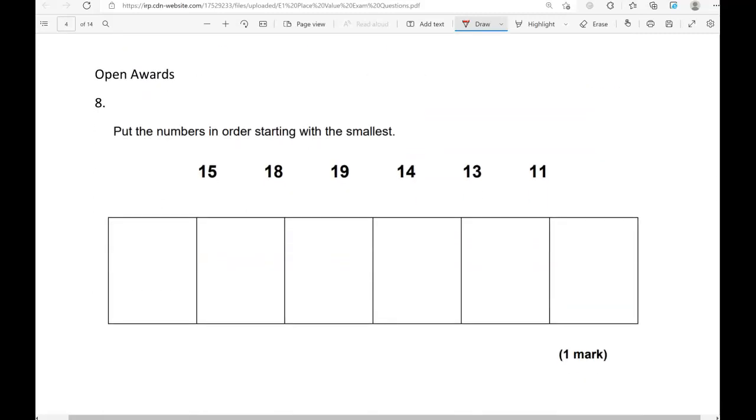Put the numbers in order starting with the smallest. We've got 15, 18, 19, 14, 13, 11. So all of these are above 10, more than 10. If we start counting from 10, then comes 11. So 11 is the smallest out of these, then we have 13, 14, 15, 18, 19.